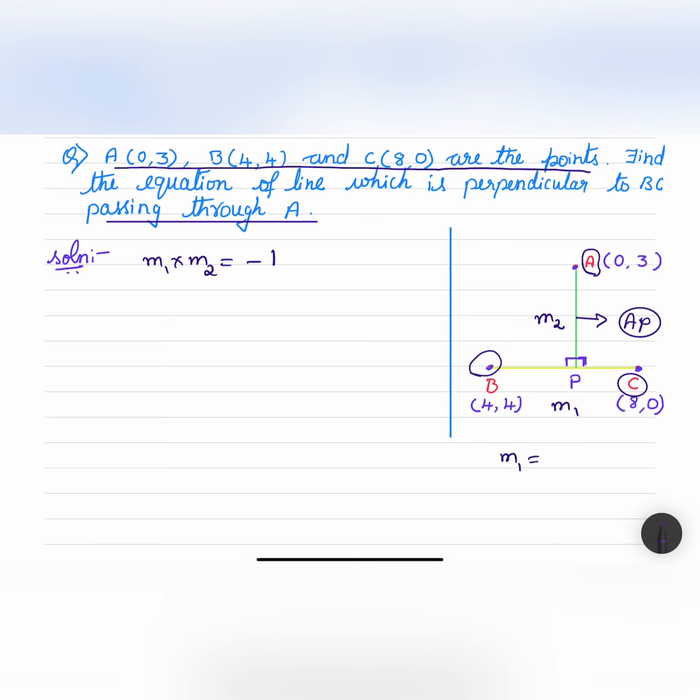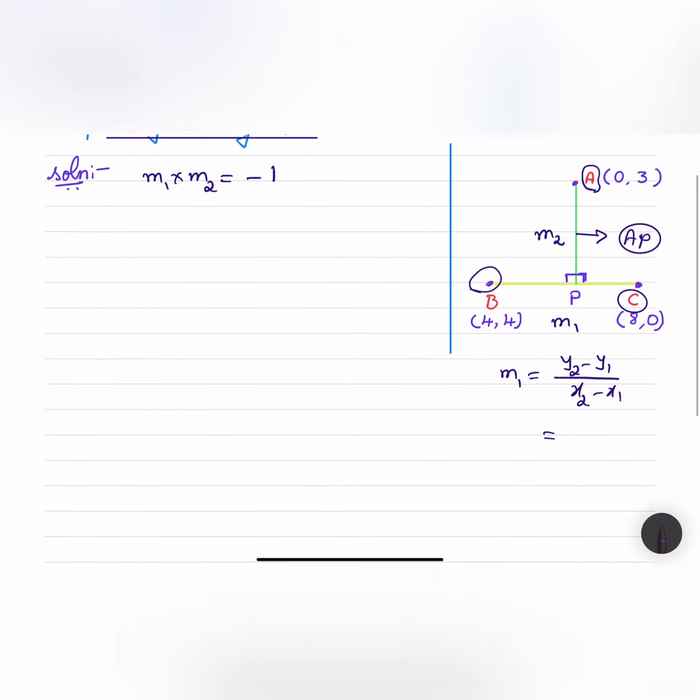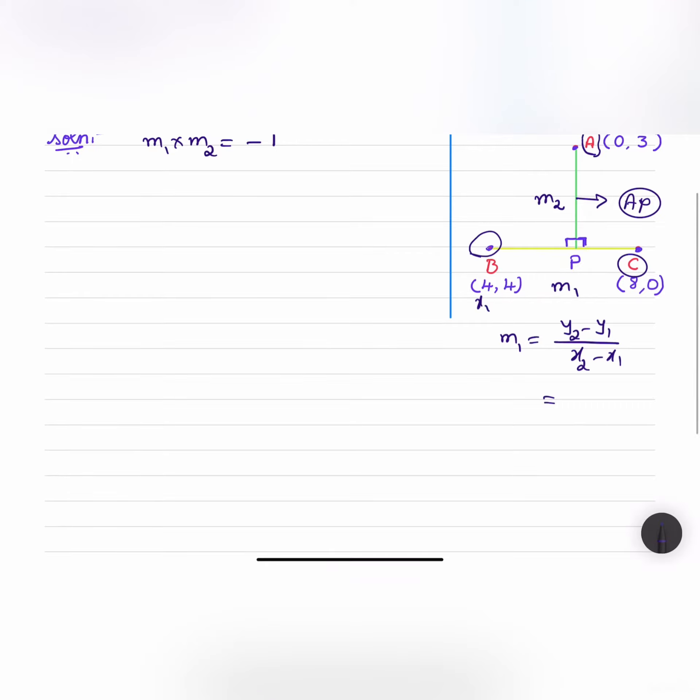If you find out M1 that is Y2 minus Y1 divided by X2 minus X1, and this is X1 Y1 and this is X2 Y2. Let us substitute those: 0 minus 4 divided by 8 minus 4, and that will be equal to minus 4 by 4 that is minus 1.